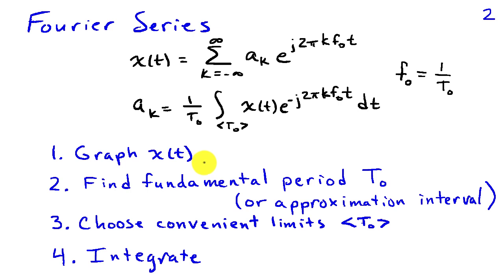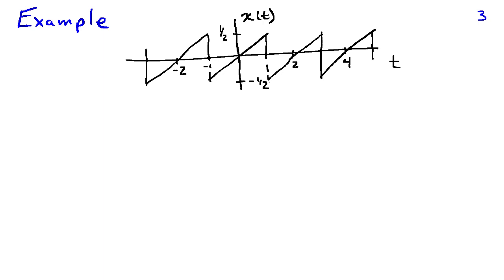Our steps for applying the integration formula are: first, graph x(t); then from the graph, find the fundamental period T0. Once you have T0, find limits that make the integration convenient or as easy as possible. The fourth step is to actually do the integration. Let's start with an example of this sawtooth waveform.